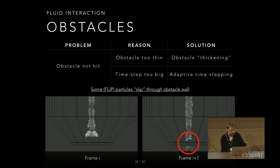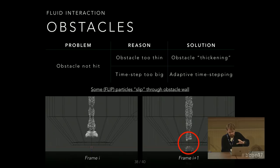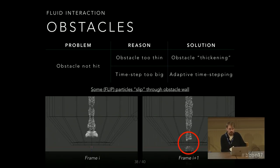I would always switch on adaptive time stepping if possible — it will take more computation time for those extra steps, but in the end it gives you the effect you're looking for. Without adaptive time stepping, you might get a situation where the particles are one step ahead and never knew about the obstacle.